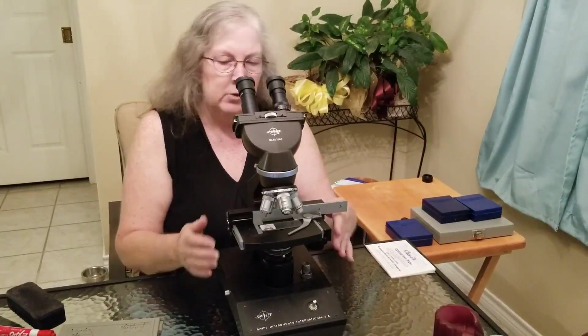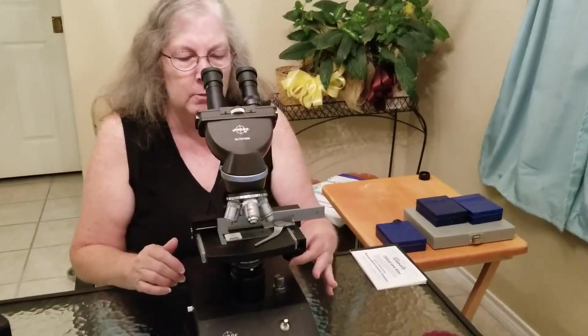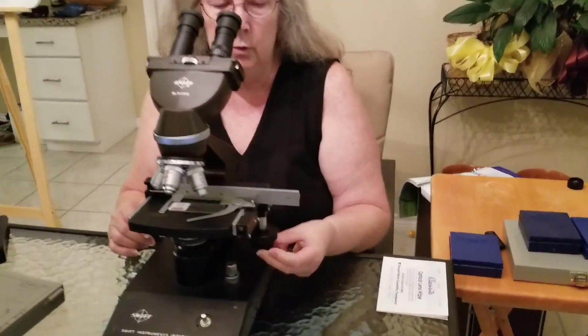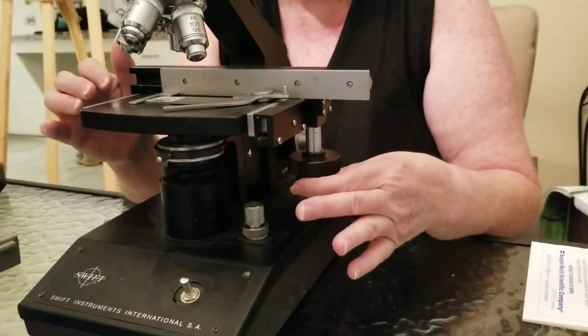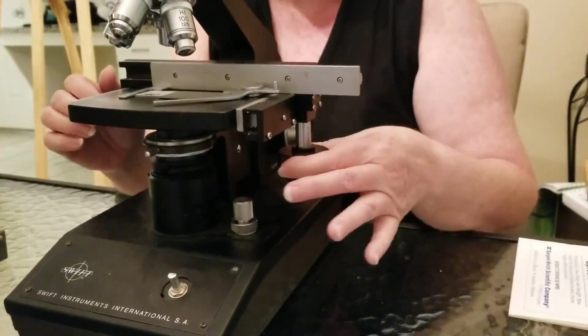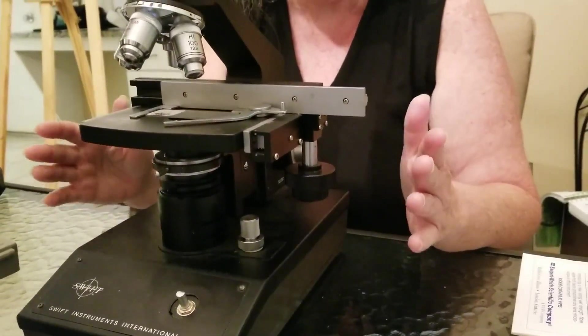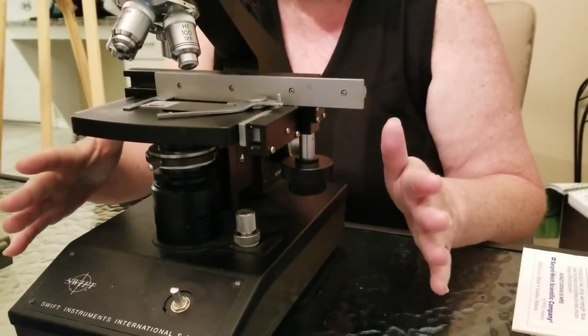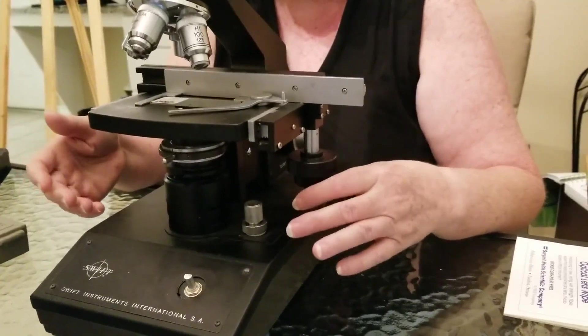On a lot of them it varies on the brand as to which side it will be on but there will be these knobs over here. If you turn there's two different knobs. The bottom one here is going to move the clamp holding the slide in place left to right and then front to back. That way you don't have to be with your hand moving the slide around. It helps the clips hold the slide nice and secure and then this will move it so you can position it how you want it.